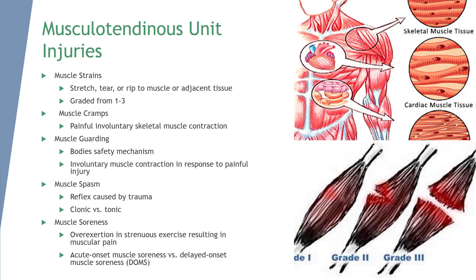Muscle soreness is an overexertion from strenuous exercise that results in muscular pain, generally following participation in an activity an individual is unaccustomed to or an increase in activity. There are two types: acute onset muscle soreness and delayed onset muscle soreness, also known as DOMS. Acute onset muscle soreness accompanies fatigue and is transient muscle pain experienced immediately after exercise. DOMS is pain that occurs 24 to 48 hours following activity that gradually subsides, with the individual typically pain-free three to four days later.